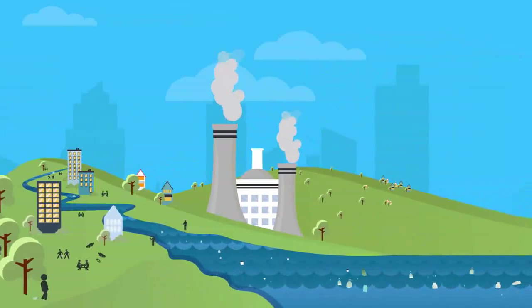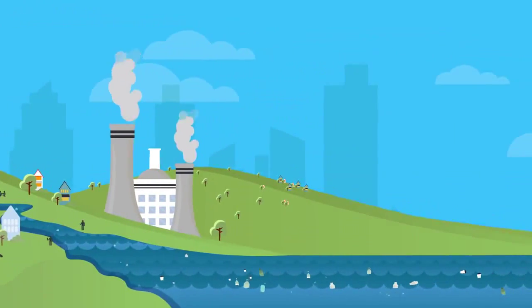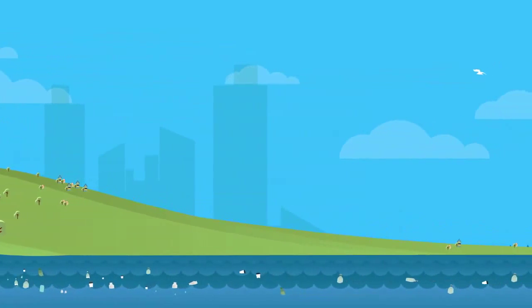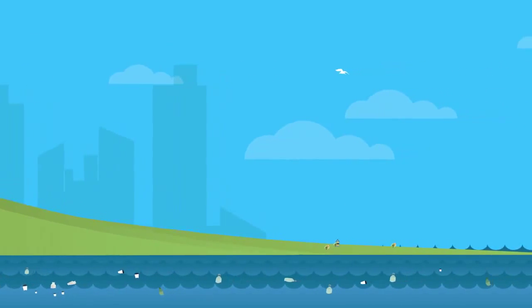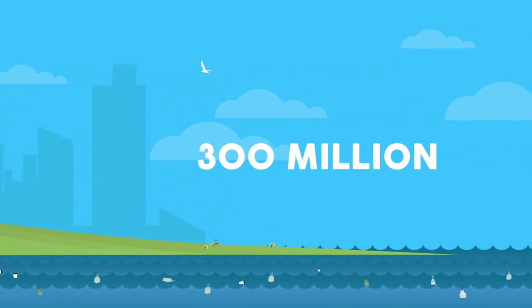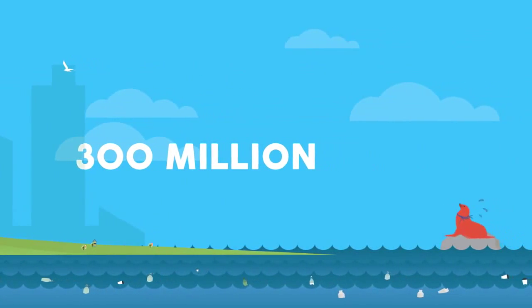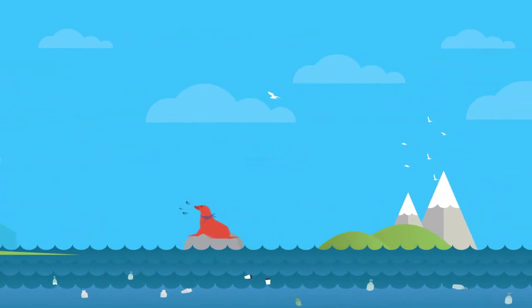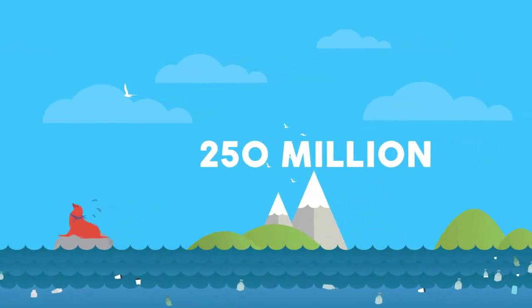Our modern-day obsession with plastic is destroying our environment. Globally, annual plastic production has boomed from 1.7 million tons in 1950 to almost 300 million tons today. And if this trend continues, as much as 250 million metric tons of plastic could make its way into the ocean by 2025.